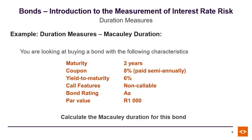To calculate the Macaulay duration, the bond is a two-year bond with an 8% coupon paid semi-annually, it has a 6% yield to maturity, it's non-callable, and it has a 1,000 Rand par value. We now have to calculate the Macaulay duration.